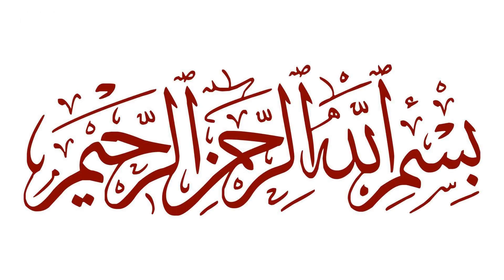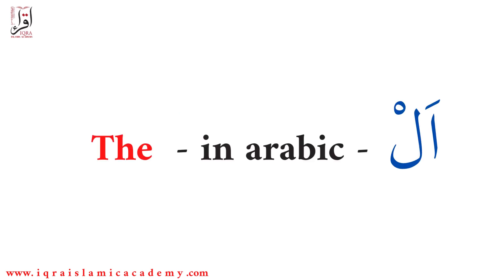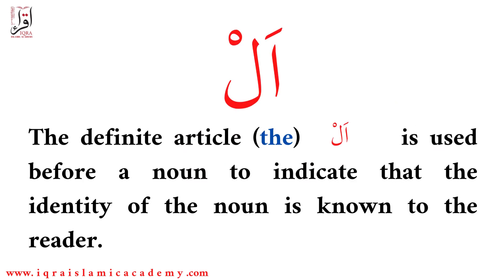Bismillah ir-Rahman ir-Rahim, we praise Allah and send blessings upon His noble messenger. Lesson number six: the. In Arabic we say 'al'. Al is a definite article which is used before a noun to indicate that the identity of the noun is known to the reader.